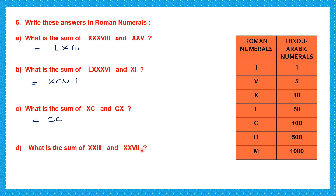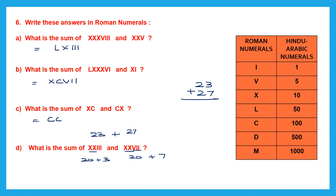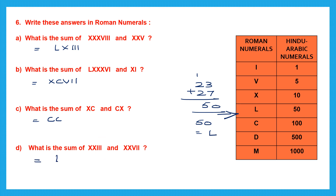Question D: XXIII is 20 plus 3 equals 23, and XXVII is 20 plus 7 equals 27. Sum of 23 plus 27: 3 plus 7 is 10 carry 1, giving 50. We write 50 in Roman numerals as L.